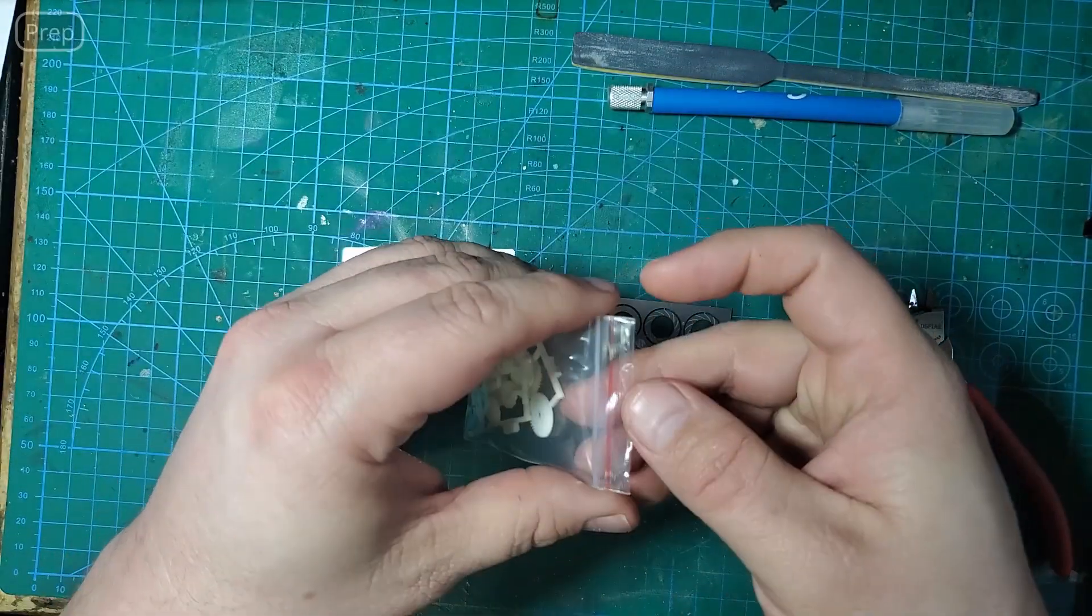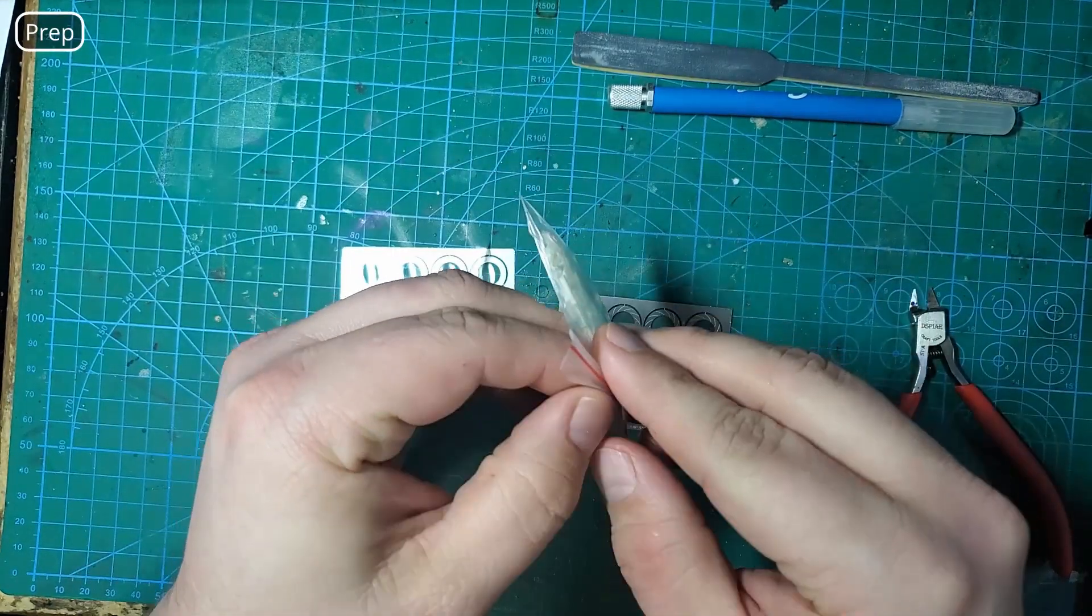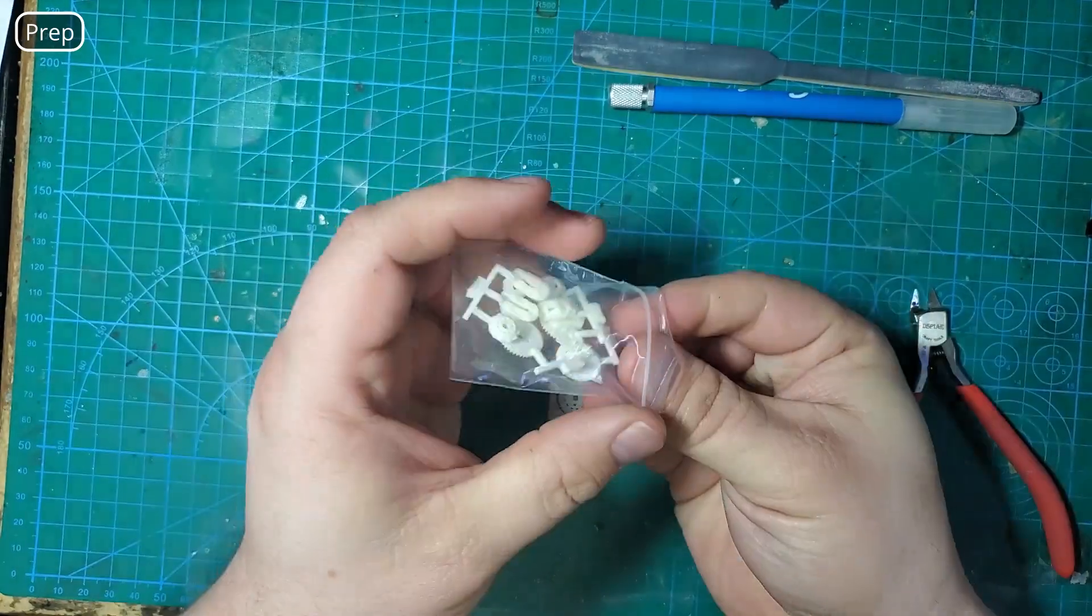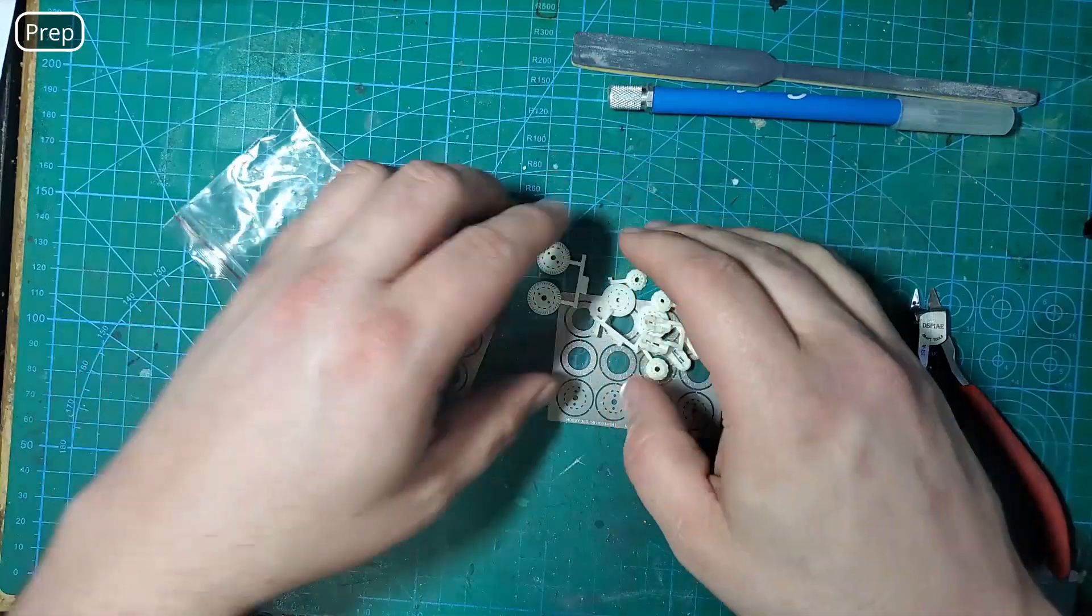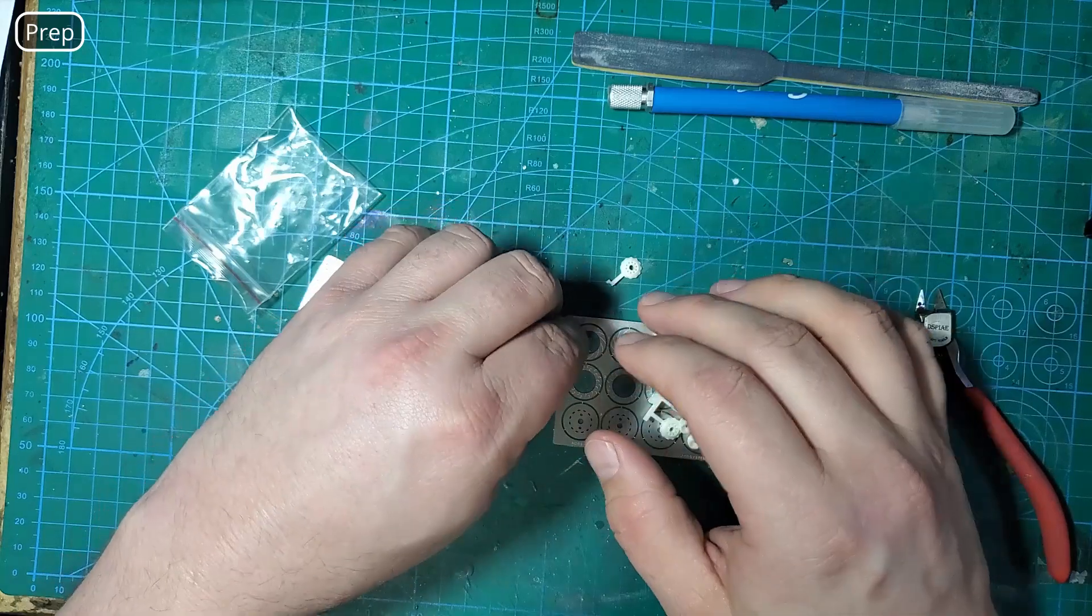First thing you need to do when working with resin parts is wash the parts. Mold release is still very common in the resin part field so I use warm water with a degreasing dish soap like Dawn dish liquid.